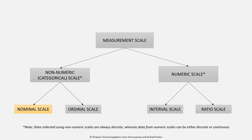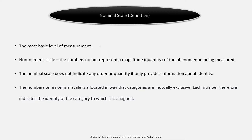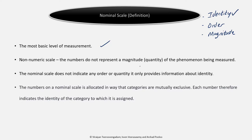Let's start with the nominal scale — the first and most basic level of measurement. We said we can capture three types of information using a scale: identity, order, and magnitude. For nominal, the only information captured is identity. The numbers do not represent a magnitude or quantity — it's a non-numeric scale. It only provides information about identity, so that's the lowest level of measurement.